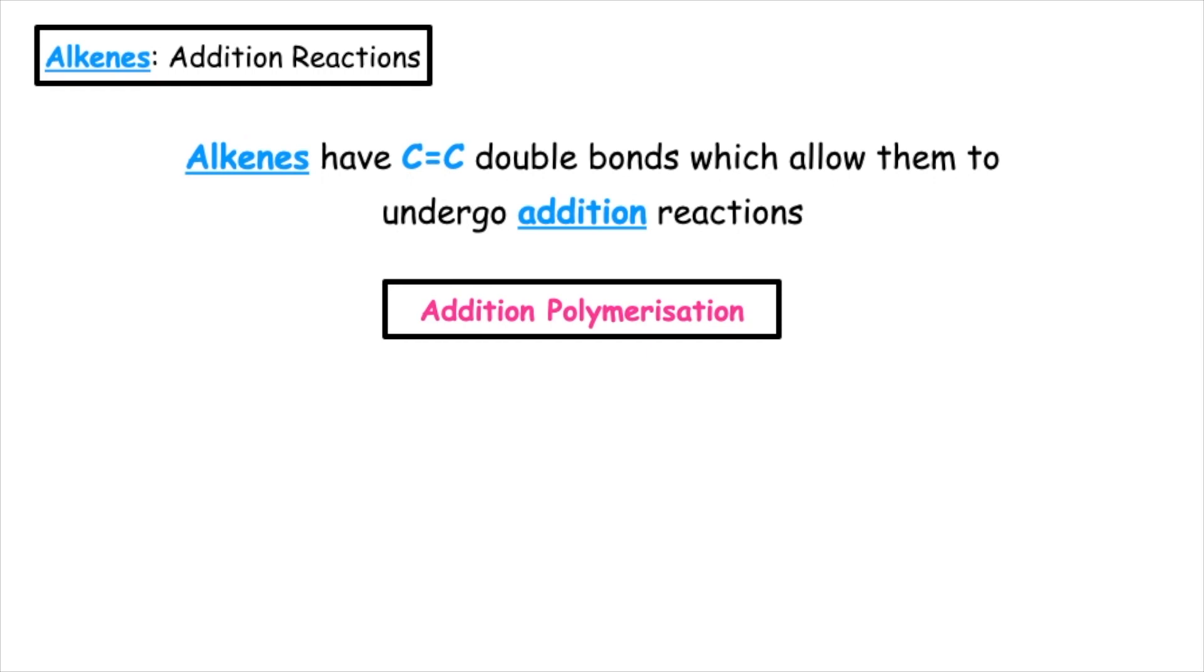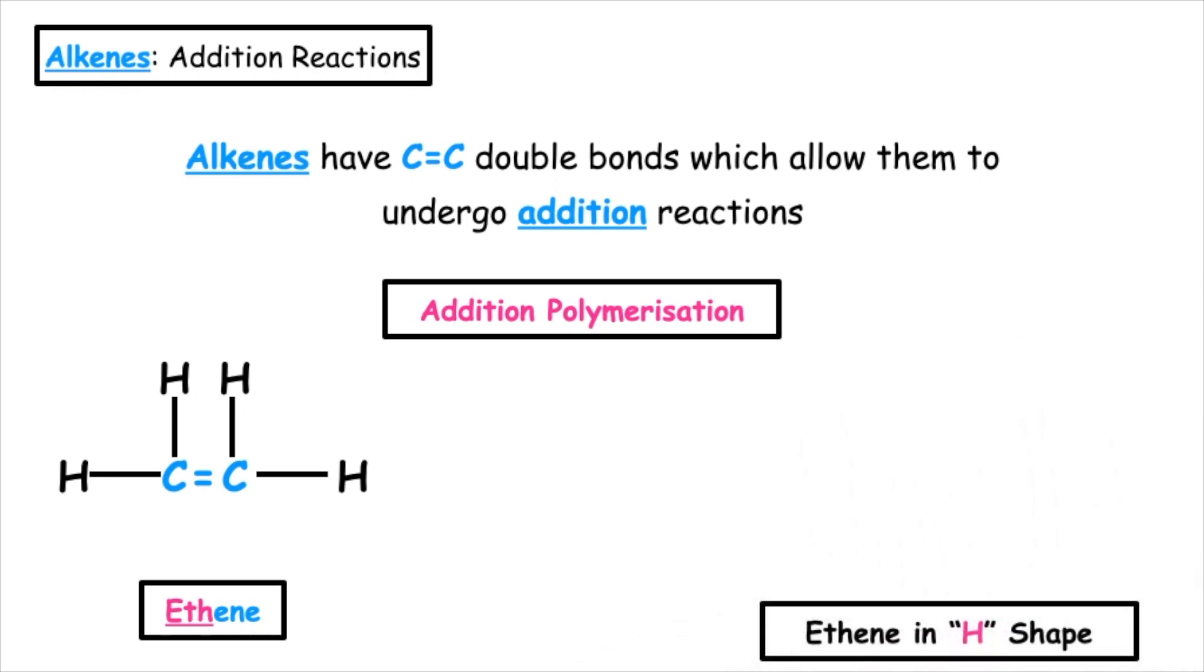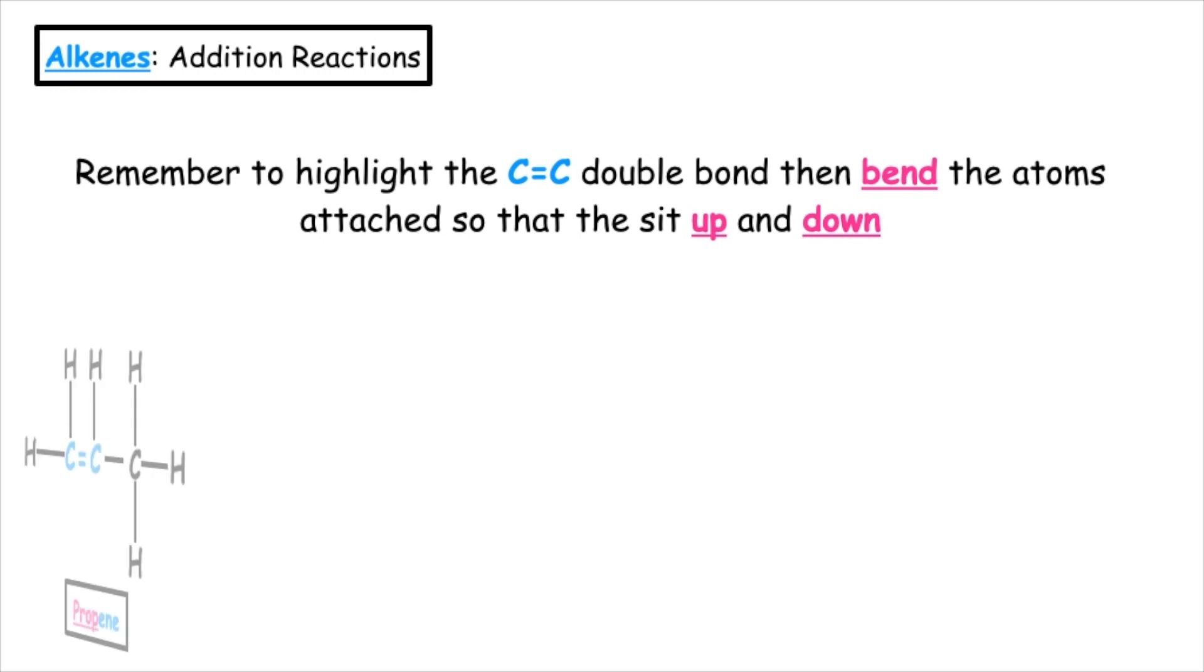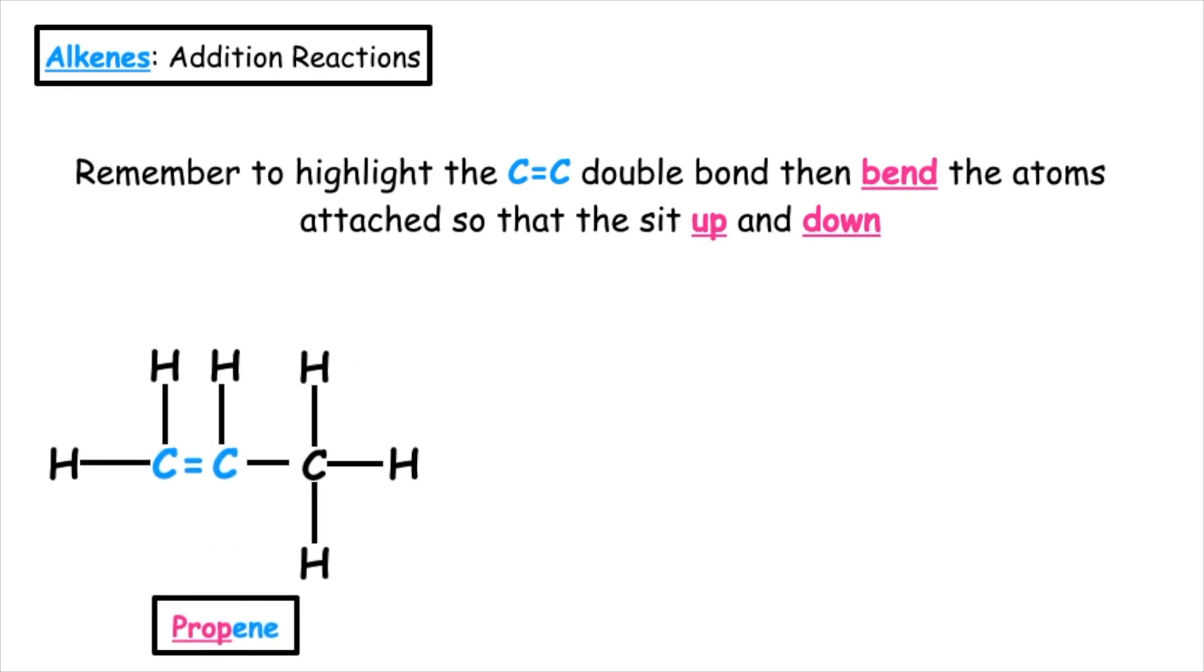What we have to be able to do is to take our straight-chained alkene and change it into the H shape. We do this by bending the bonds down to form what we would call an H shape. To do this, I always highlight the carbon-to-carbon double bonds. In this case, I've made them blue. And then we bend the atoms attached so that they sit up and down from the carbon-to-carbon double bonds.